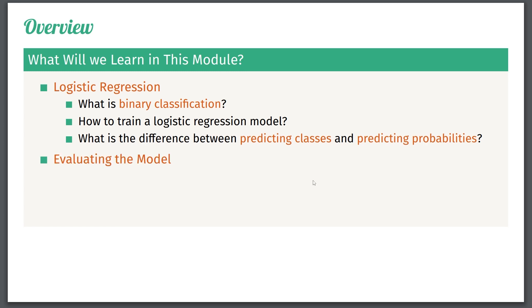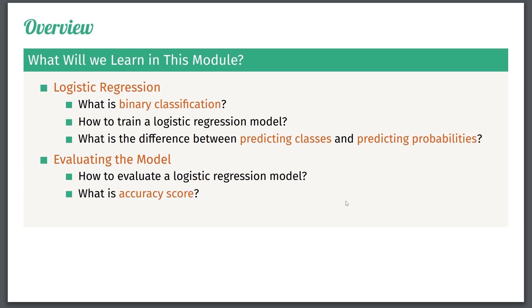Additionally, we'll talk about evaluating such models. So the question is, how do we really evaluate a logistic regression model? And one of the most common ways of doing this is to use what's called an accuracy score. So we need to delve into what the accuracy score actually is. And I promise you, an accuracy score is something that's incredibly intuitive, so this will be no problem for you to learn.